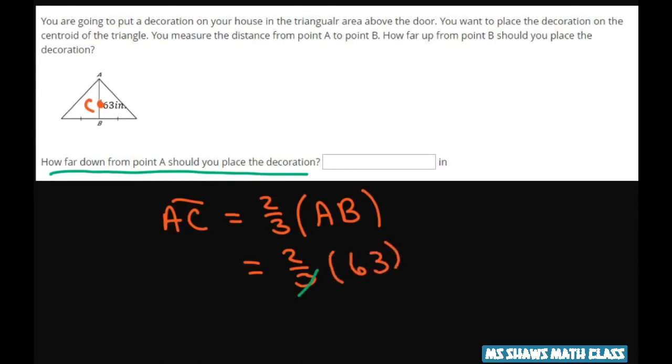Three goes into 63 twenty-one times, and 2 times 21 is 42. Note, anytime you have the centroid, this would be 42 for this is how far down, how far up is 21, and this is always half of the how far down.